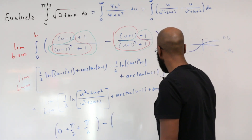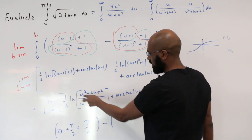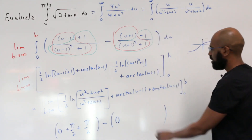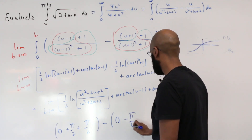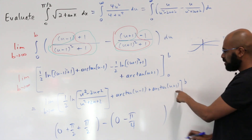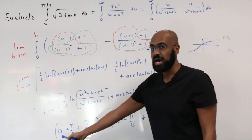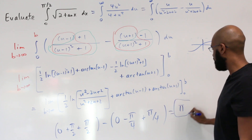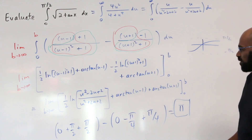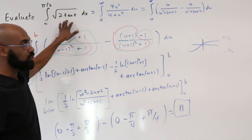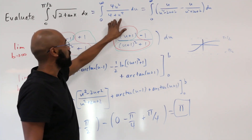Subtracting the evaluation at 0: the log term gives ½ ln(2/2) = ½ ln 1 = 0. Then arctan(−1) = −π/4 and arctan(1) = π/4, so those contributions cancel to 0. The final answer is therefore π — combining π from the upper limit and 0 from the lower limit.